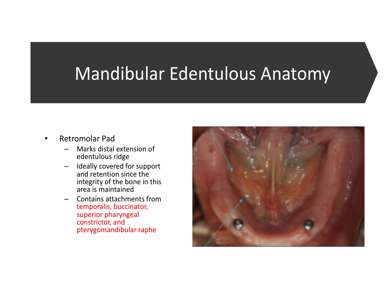Now we have another unique structure: the retromolar pad. Like the hamular notch, it defines the posterior boundary of the buccal vestibule. The retromolar pad also marks the distal extension of the alveolar or edentulous ridge, as shown in these areas here. It's a sensical name because it's behind where the molars would have been — hence retromolar. If the patient still had their teeth, the retromolar pad would be behind or distal to the terminal molars on both sides.